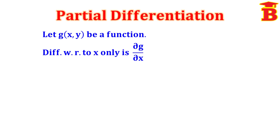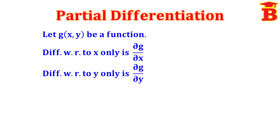In this case, we have to treat y as constant. Next, differentiating with respect to y only is denoted as ∂g/∂y. This means we have to differentiate partially with respect to y. In this case, we have to treat x as constant.